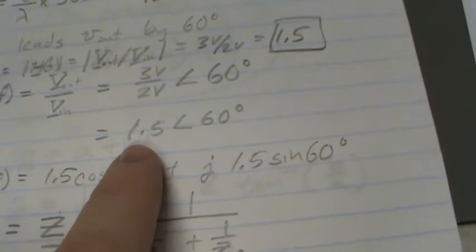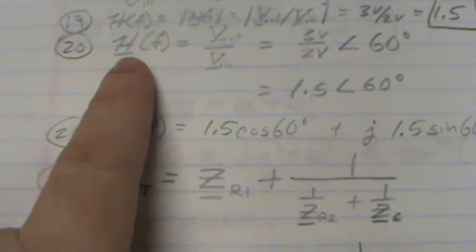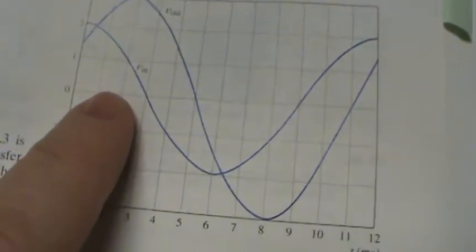That will tell you how the output depends upon the input. There's a change in magnitude from the in to the out, but also a change in phase. That's represented by the transfer function. It shows you what you get out based on what you put in.